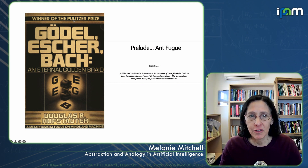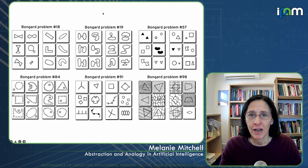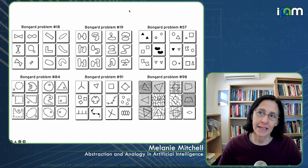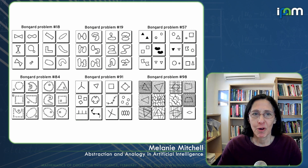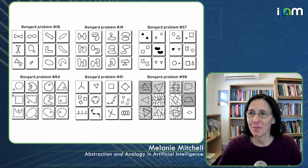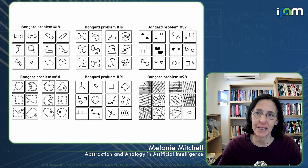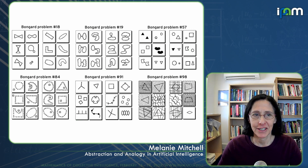In Gödel-Escher-Bach, Hofstadter looks at abstraction in a very idealized form using the so-called Vanguard problems, which were a challenge created by a Russian computer scientist back in the 1960s to challenge artificial intelligence systems using these visual abstraction problems.